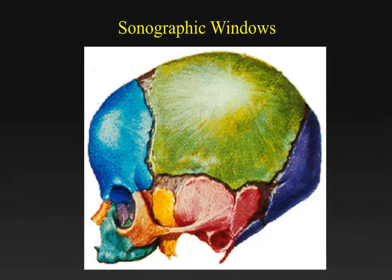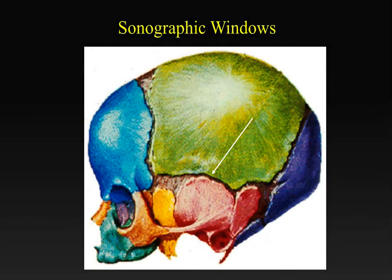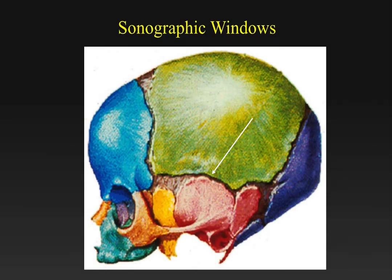The next sonographic window is the squamosal suture, located at the junction of the temporal and parietal bones. Even though the suture may be quite small, the pterion, or inferior aspect of the parietal bones, is very thin and allows the transmission of ultrasound. Scanning in an axial projection, this view is an excellent view for looking at the basal cisterns.